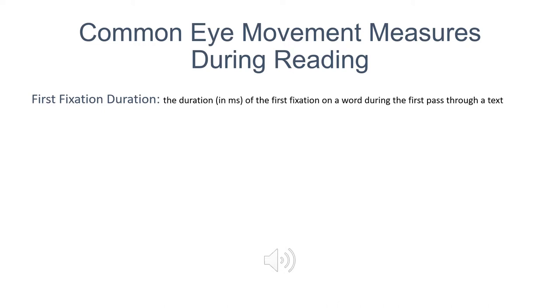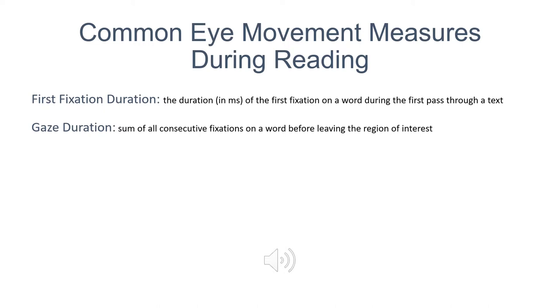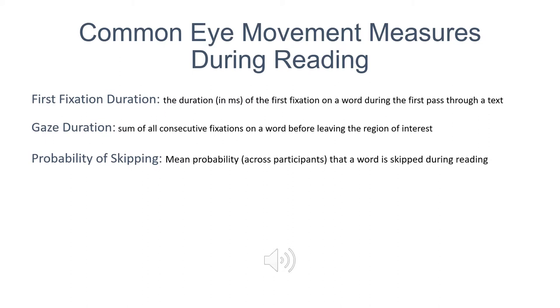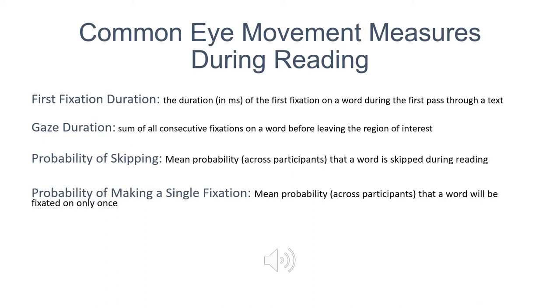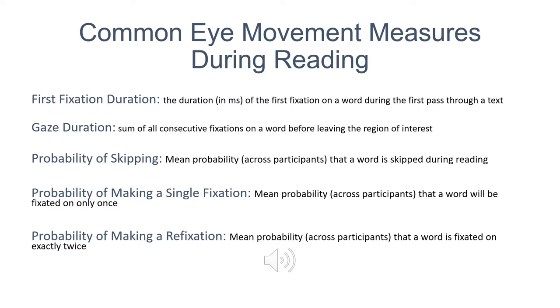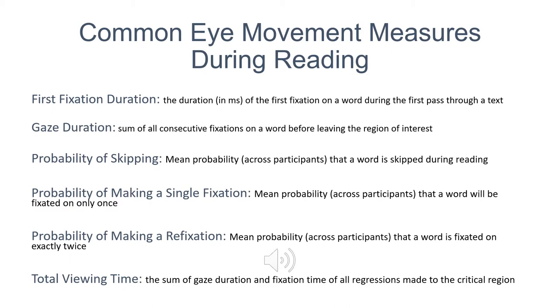The most common eye movement measures recorded during reading are: first fixation duration — the duration in milliseconds of the first fixation on a word during the first pass through text; gaze duration — the sum of all consecutive fixations on a word before leaving the region of interest; probability of skipping — the mean probability across participants that a word is skipped during reading; probability of making a single fixation — the mean probability across participants that a word will be fixated on only once; probability of making a re-fixation — the mean probability across participants that a word will be fixated on exactly twice; and total viewing time — the sum of gaze duration and fixation time of all regressions made to the critical region.